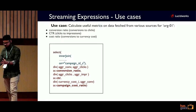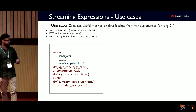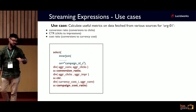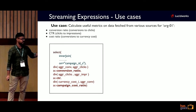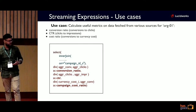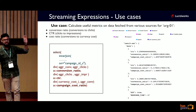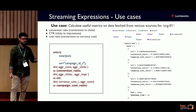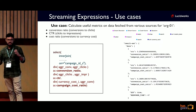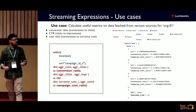Now that all data is at one place, we perform mathematical calculations. We wrap the entire prior query with a select and perform divisions: aggregated conversions divided by clicks gives conversion ratio; aggregated clicks divided by impressions gives CTR click-through rate; currency cost divided by aggregated conversions gives cost ratio. Looking at the results, campaign 03 has the best CTR at 0.36, while campaign 01 has the best conversion ratio and cost ratio compared to the other two.